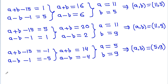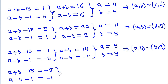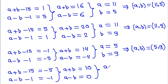Case 4: If (a+b-15) = -5 and (a-b-1) = -1, then a+b = 10 and a-b = 0, so a = 5 and b = 5.